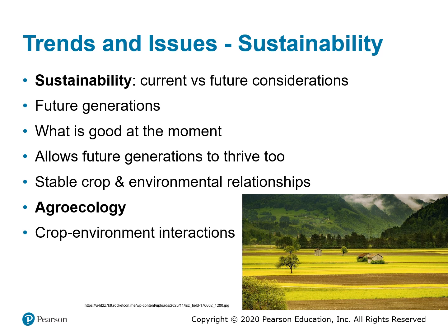These and other issues with production have led to the concept of sustainability. The definition of sustainability is meeting the needs of the present generation without compromising the ability of future generations to meet their needs — put together by Brundtland as far back as 1987. Sustainability considers not only what is good at the moment but allows future generations to thrive too. Maintaining a sustainable crop system requires not only a stable crop but also good environmental relationships, and this is called the study of agroecology, which looks at crop and environmental interactions.